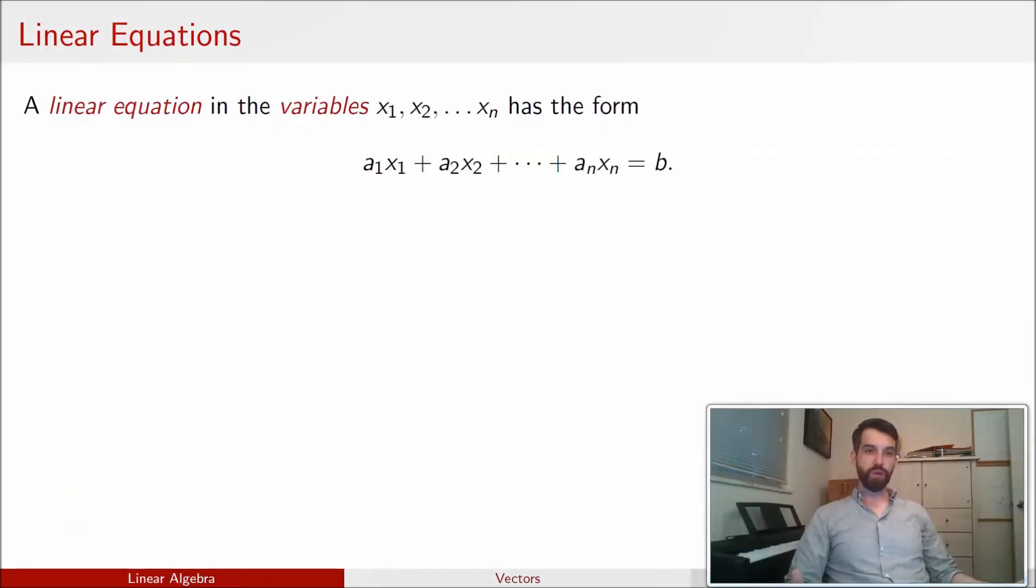So a linear equation is an equation that has a whole bunch of different variables. In this case, I have n of them: x1, x2, all the way down to xn. But the equation doesn't have cosine of a variable, it doesn't have a variable squared, it doesn't have e to the power of a variable. Every variable that appears here is all raised to the power of 1. The first variable is only occurring to the power of 1, the second variable only occurring to the power of 1, and so on.